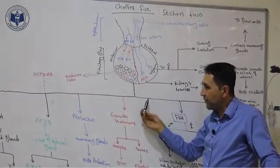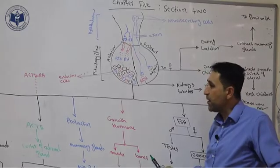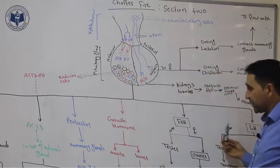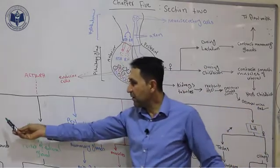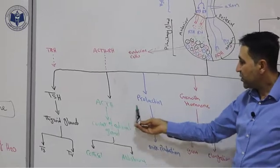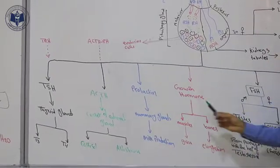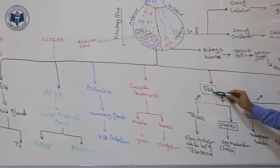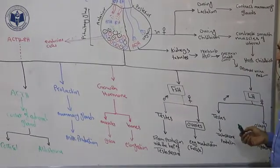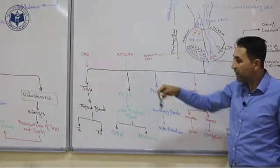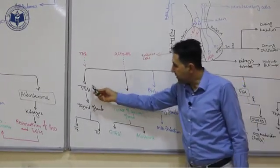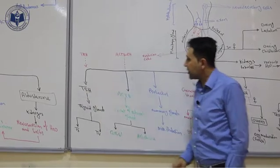The anterior lobe produces several hormones; five are mentioned in the book: thyroid stimulating hormone (TSH), adrenocorticotropic hormone (ACTH), prolactin, growth hormone, FSH, and luteinizing hormone (LH). Each of these hormones has targets within other glands in the body.